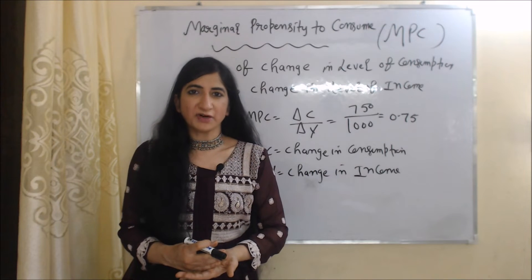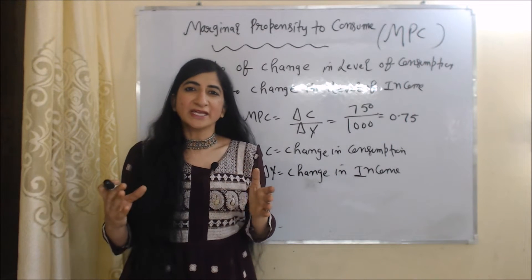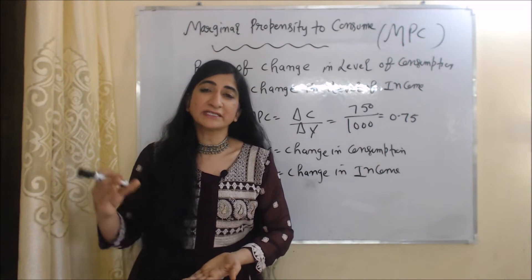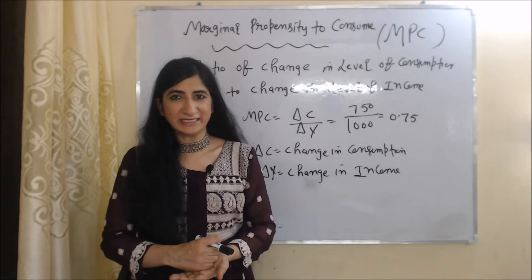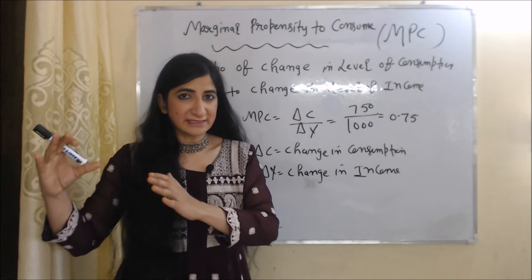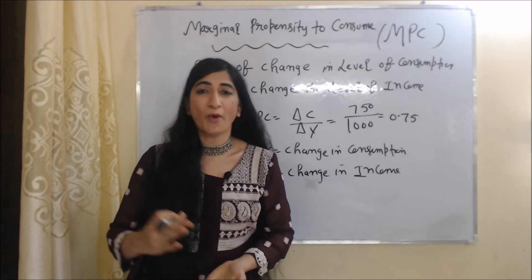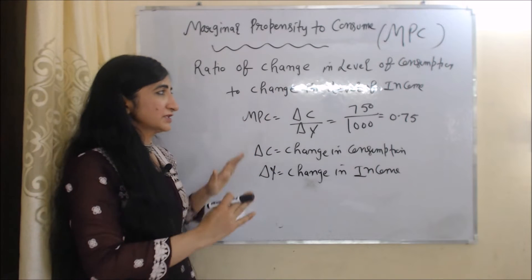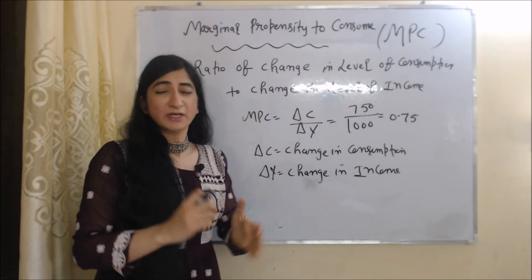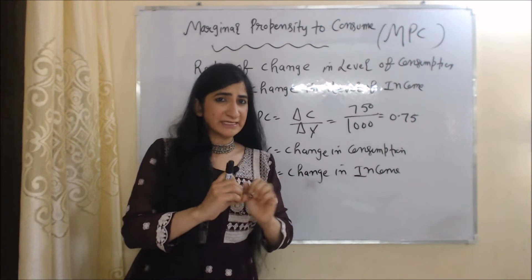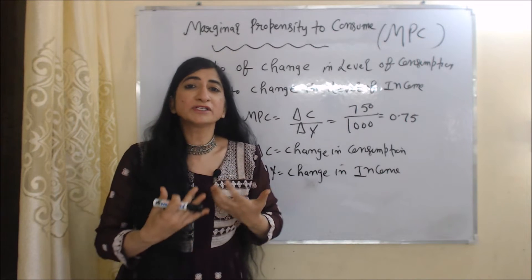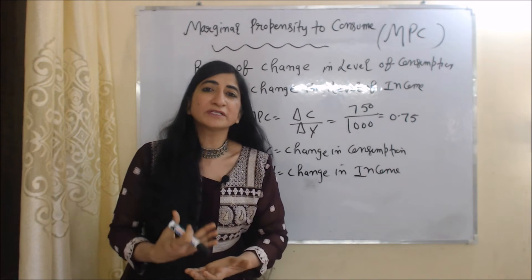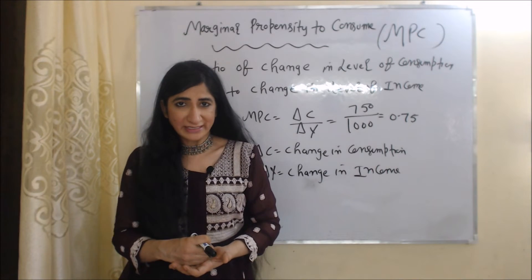Now we will see what is marginal propensity to consume. In short, we can say MPC. MPC basically tells us how much our consumption changes when our income changes. That's why MPC is the ratio of the change in consumption to the change in income. Don't confuse between MPC and APC. APC tells us how much part of our income we consume, while MPC tells us how much our consumption changes when our income changes.